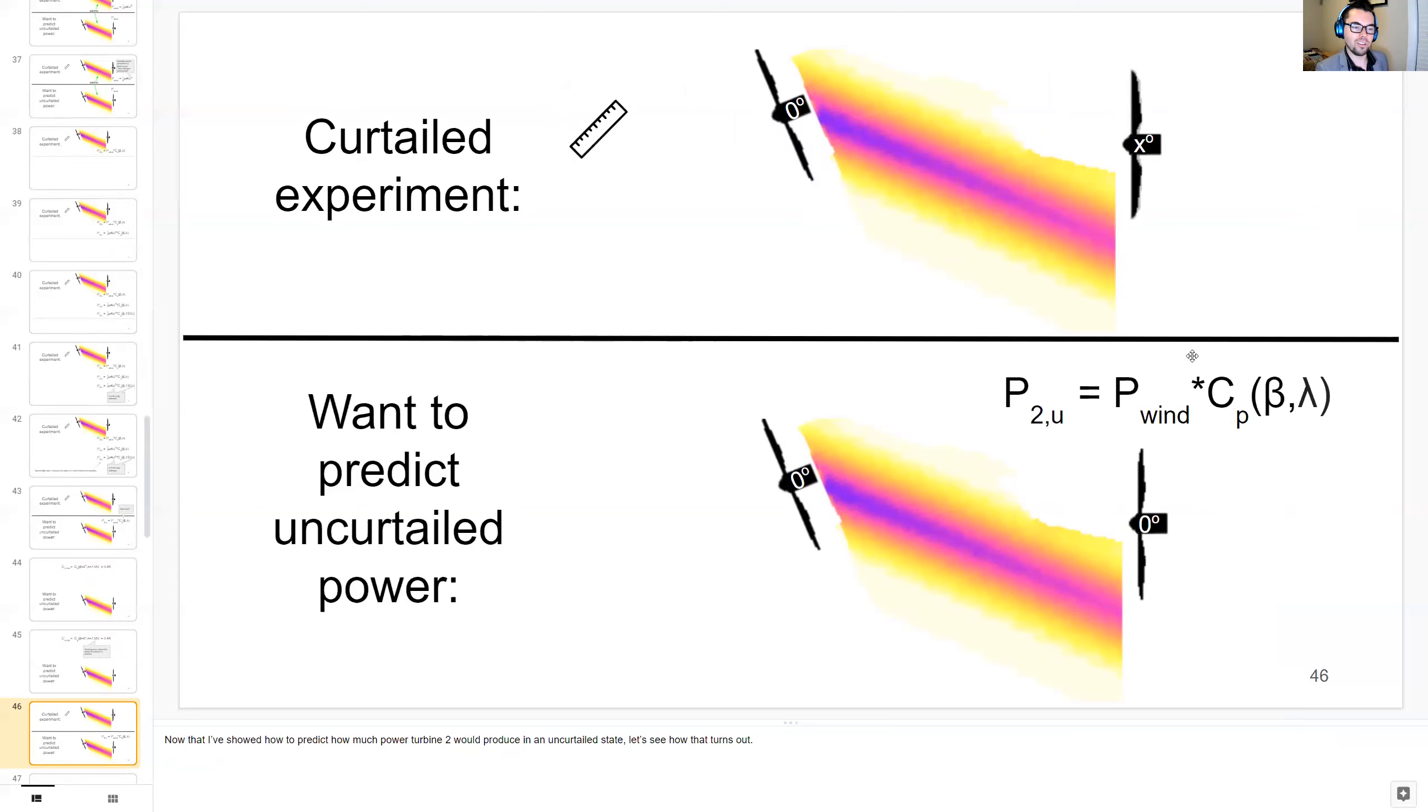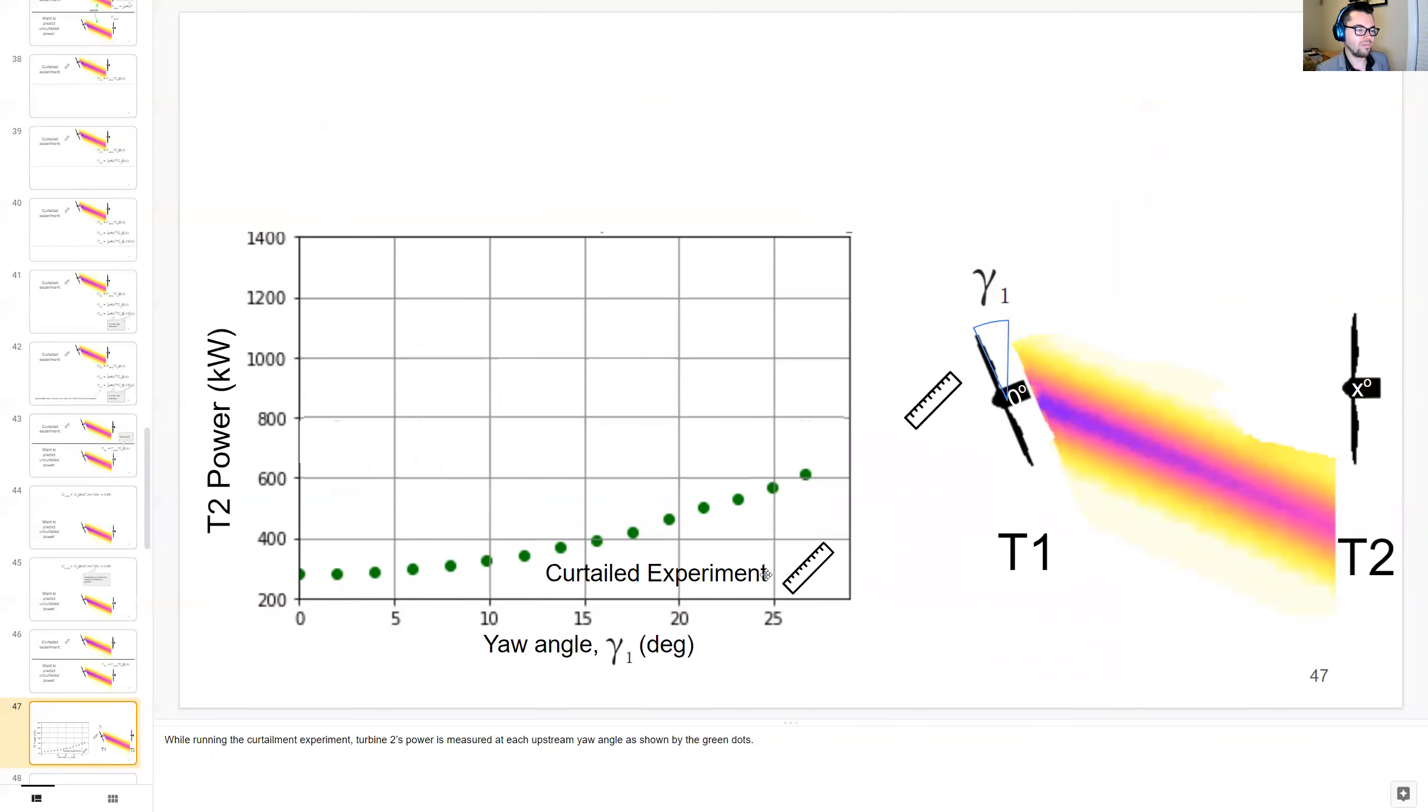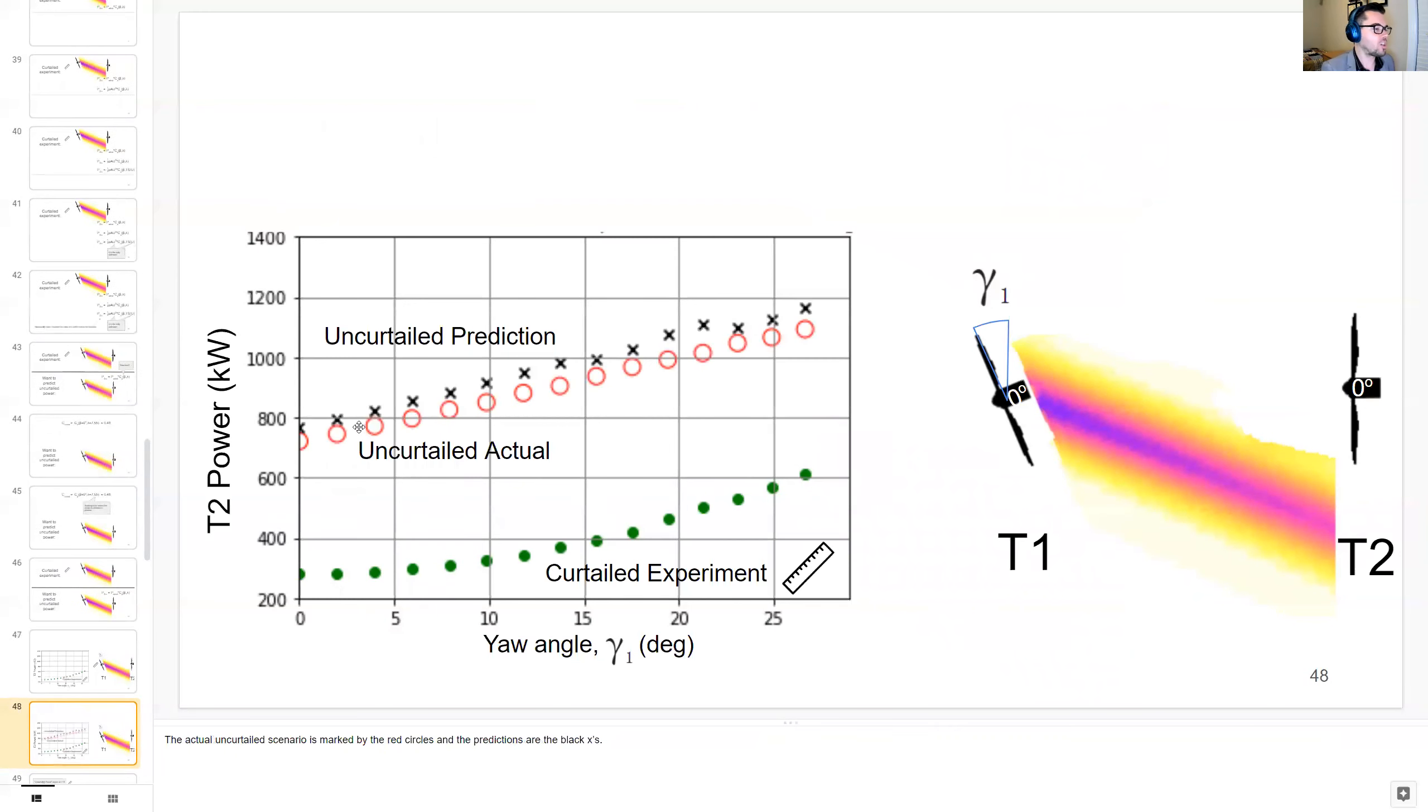So now we found both the power in the wind and the efficiency of this turbine. So now we can actually try to solve this equation and predict this uncurtailed turbine 2 power production. And this is done first by running this curtailment experiment. Turbine 2's power is measured at each upstream yaw angle as shown in the green dots. And the actual uncurtailed scenario is marked by these red circles. And the predictions are the black x's and you can see we get pretty close here.